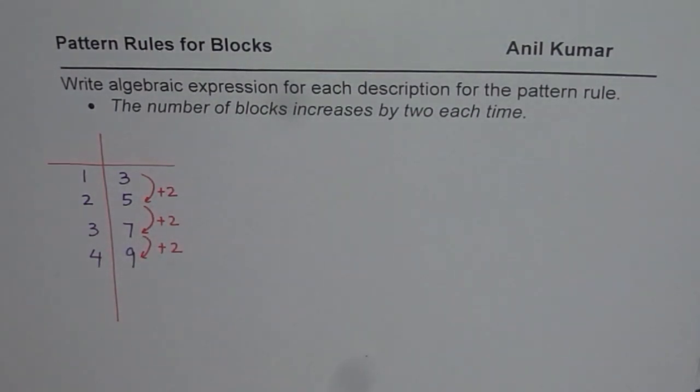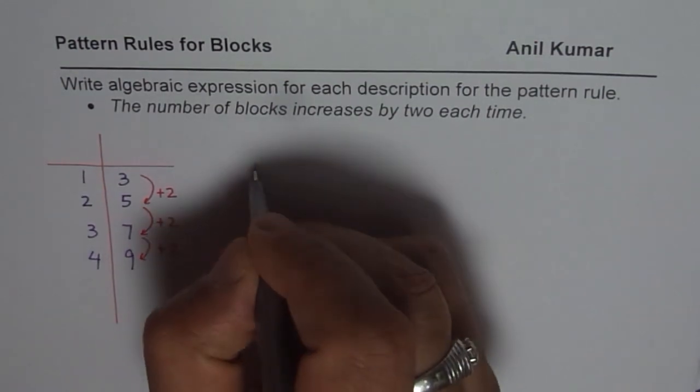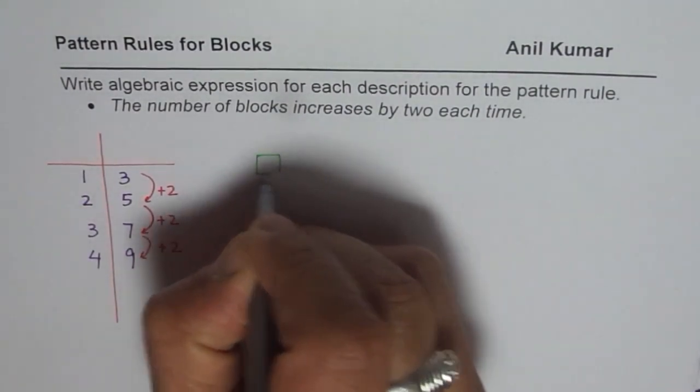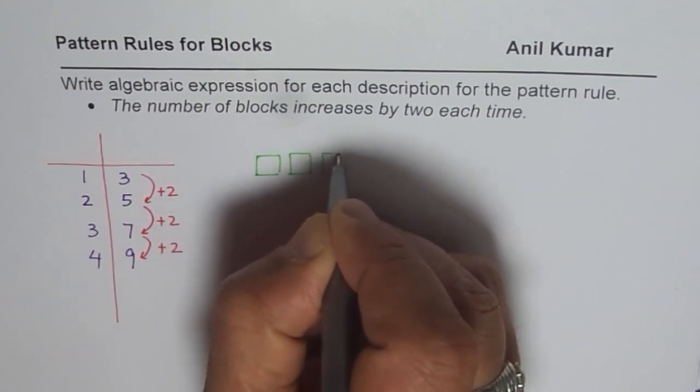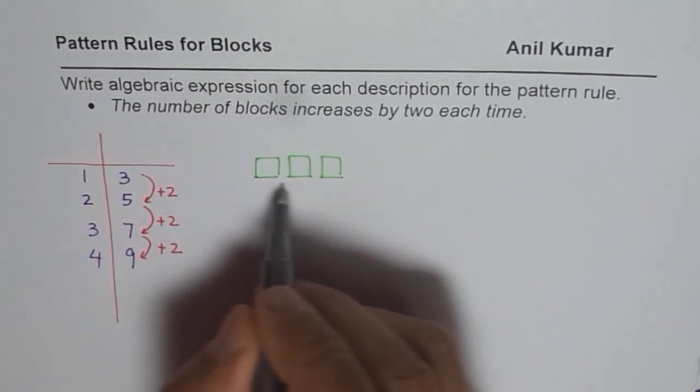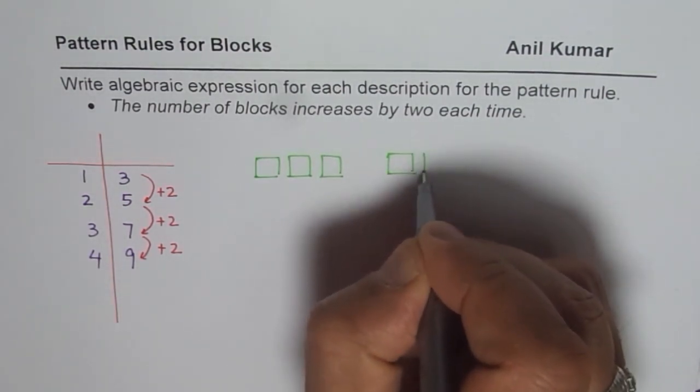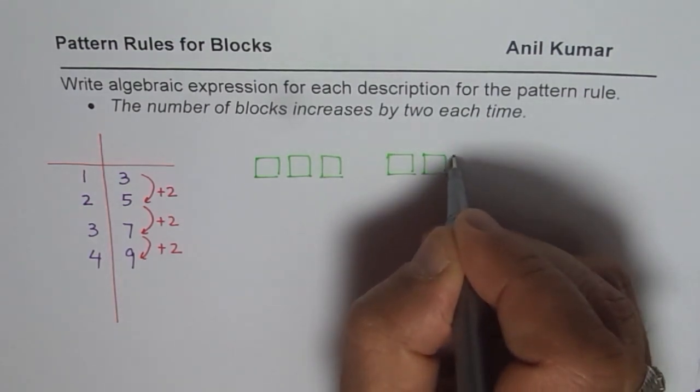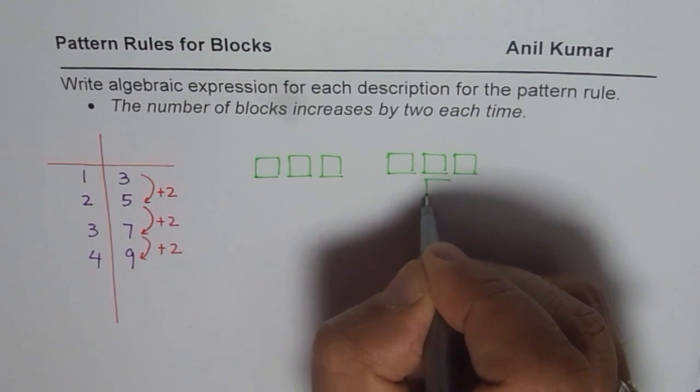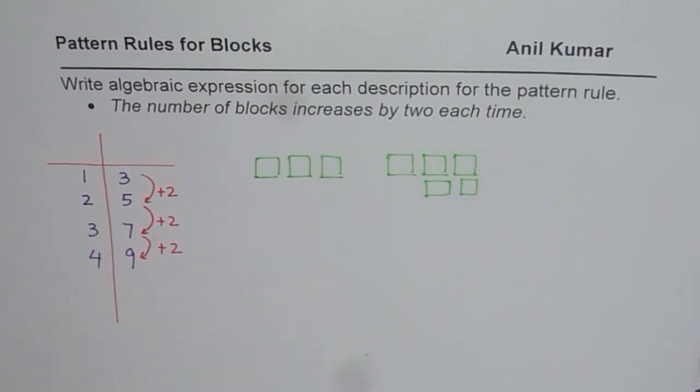Let us say that I have three blocks to start with. These are my three blocks and then what I do is I increase the number by two. So I put two more, kind of like this. So I increase it by two.